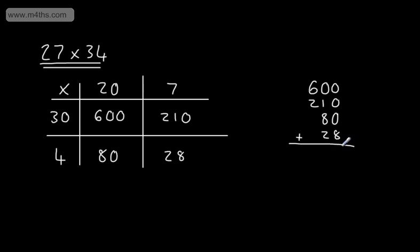So I've got 0, 0, 0, and 8. If I add those, I'm going to get 8. 1 plus 8 plus 2, that's going to give me 11. So I write 1 here, and I carry 1. 6 and 2, add the 1, that's going to give me 9, and we can say the answer is 918.